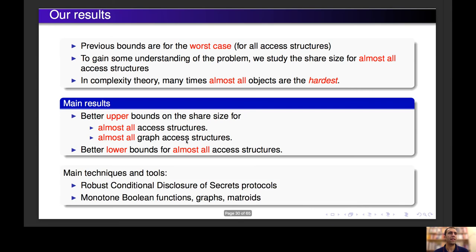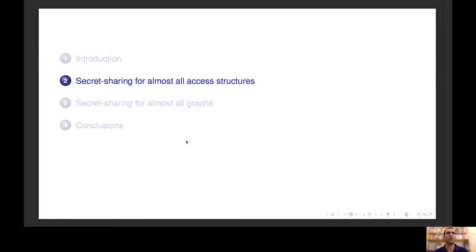The main techniques and tools we used are robust conditional disclosure of secrets protocols — a cryptographic primitive that was recently introduced — and results on monotone Boolean functions, graphs, and metrics. Now we'll see the results we got for almost all access structures.